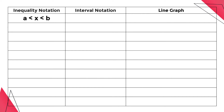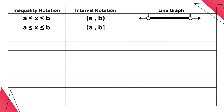The first inequality notation means all real numbers x greater than a but less than b. This is how we write it down in interval notation, and this is how it looks like in the graph. For the second inequality notation, all real numbers x greater than or equal to a but less than or equal to b. This is how we write it down in interval notation, and this is how it looks like in the graph.